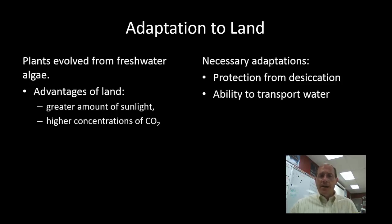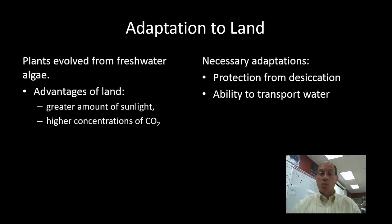Living on land also means the plant is no longer surrounded by water, so it has to be able to transport water. Some of the earliest plants have very rudimentary or simple systems for doing so, and the more evolved plants have a complex vascular system to transport water from the ground up to other portions of the plant. These plants can grow tall and therefore take advantage of increased collection of sunlight.